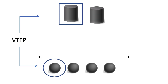This is where the COOP database comes into play. It is held only on the spines and is synchronized between spines when you have more than one spine in your architecture. The Council of Oracle Protocol, also known as COOP, is used to communicate the mapping information — which is the location and identity — to the spine proxy.